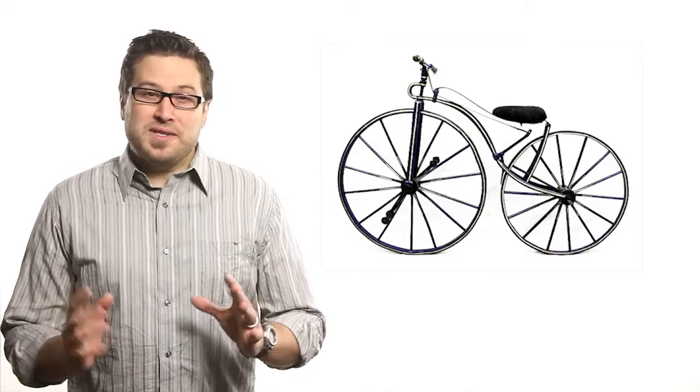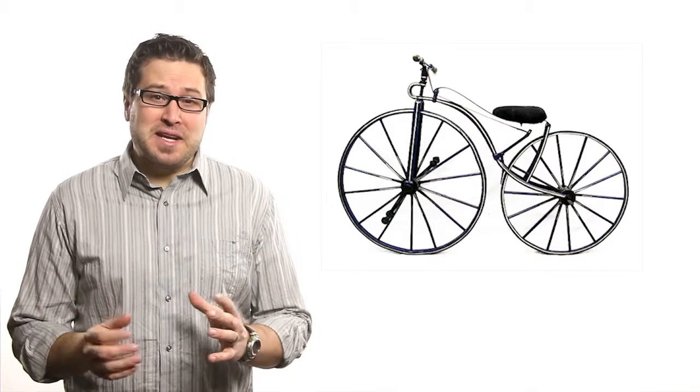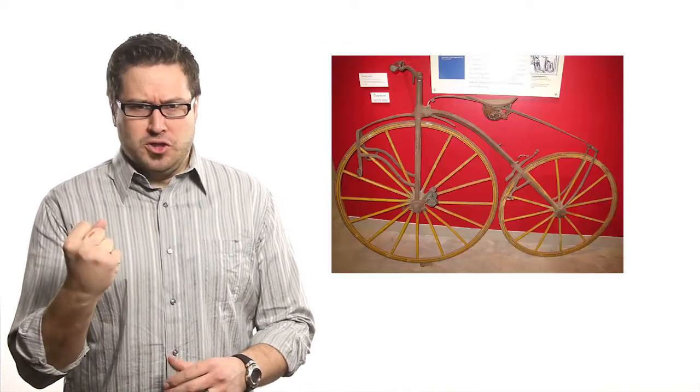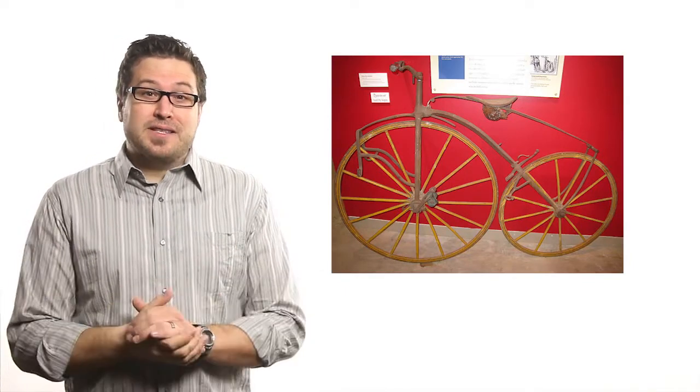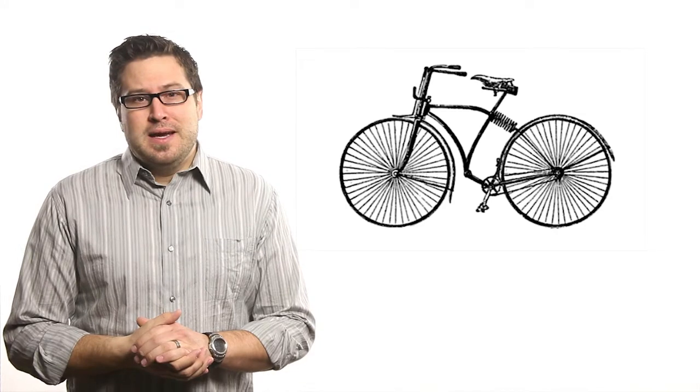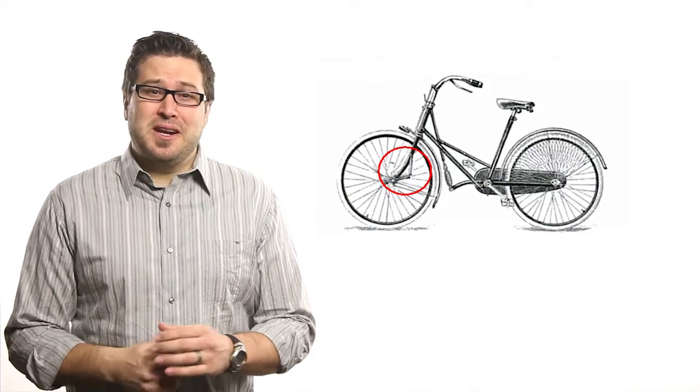Bicycles didn't always have rubber tires. Early models had uncomfortable wheels made of iron and unflattering nicknames like the bone shaker. Designers often added spring suspension for a smoother ride, even on unpaved roads. And the ladies models could be ridden even in a long skirt.